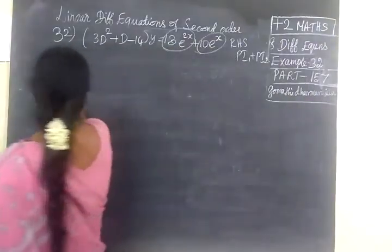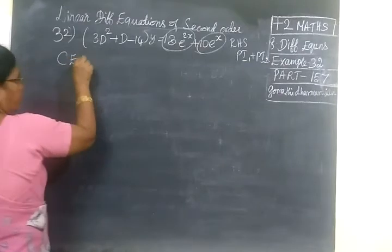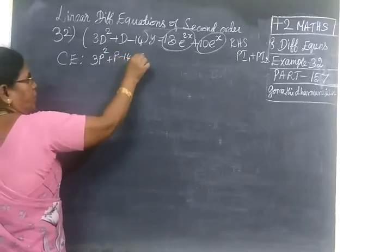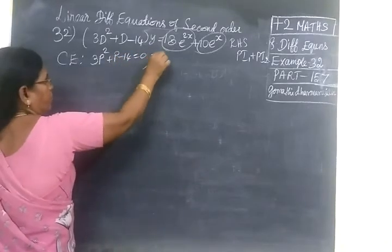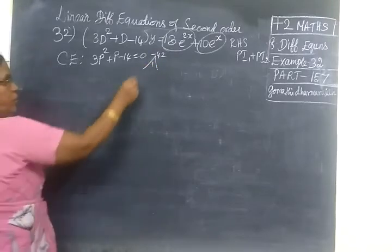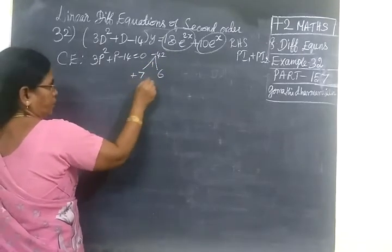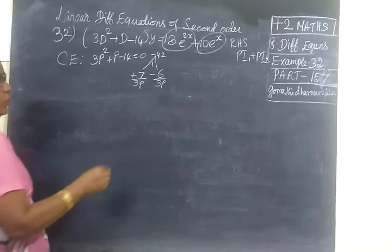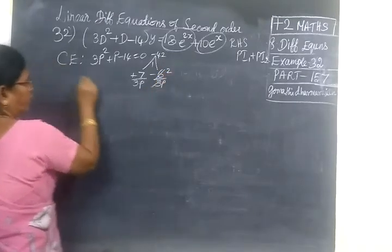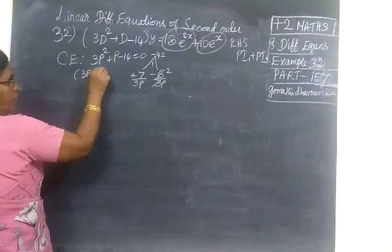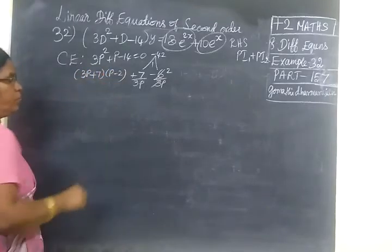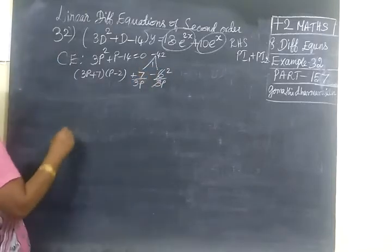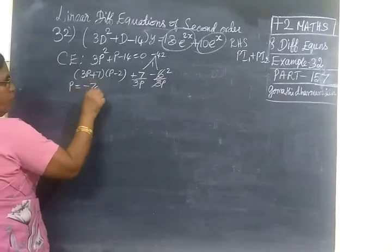So first you find the complementary characteristic equation. 3p² plus p minus 14 equal to 0. So multiply to get minus 42 and add to get 1. You can take 3p plus 7 and p minus 2. So p equal to minus 7/3 and 2.